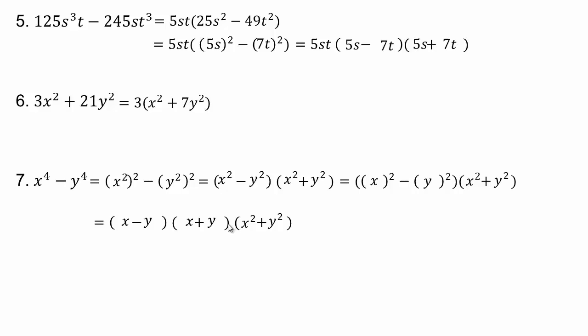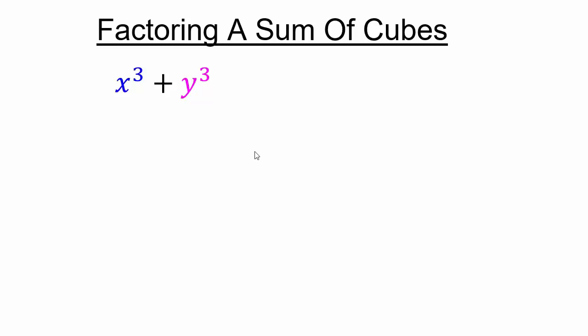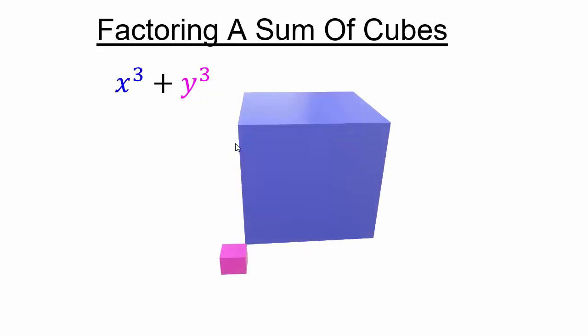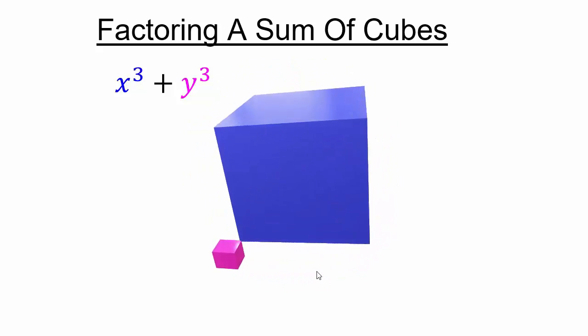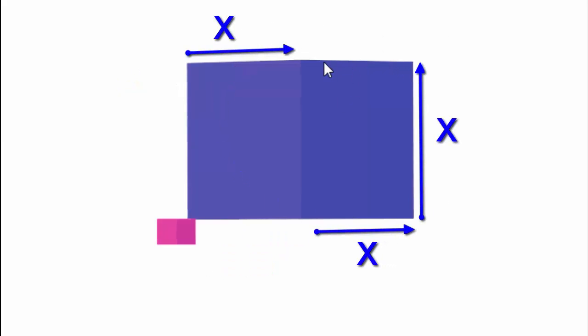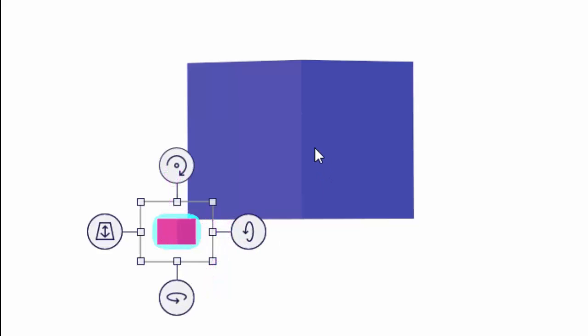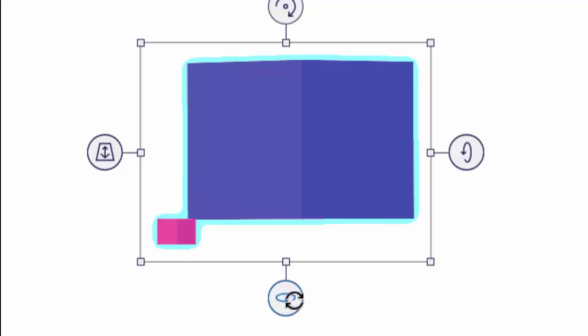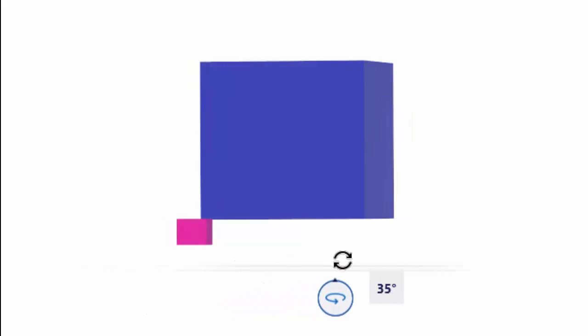Let's talk about factoring a sum of cubes. x cubed plus y cubed — how can we visualize that? x cubed will be a big cube and y cubed will be a small cube. No matter what direction you look at it from, you can see it's just one cube plus another cube. The bigger one is x by x by x, or x cubed, and the smaller cube is y by y by y, or y cubed. We are actually going to build the bottom layer and talk about how we can create the formula for x cubed plus y cubed.